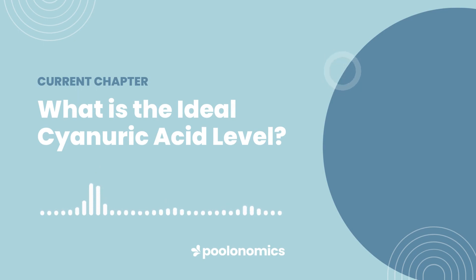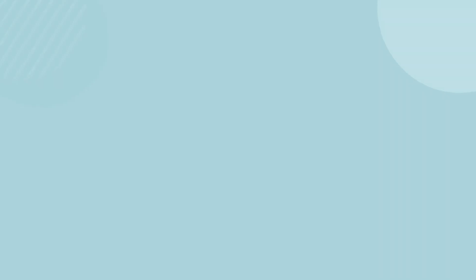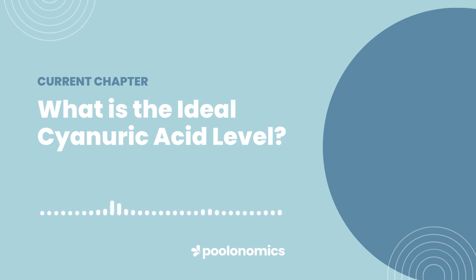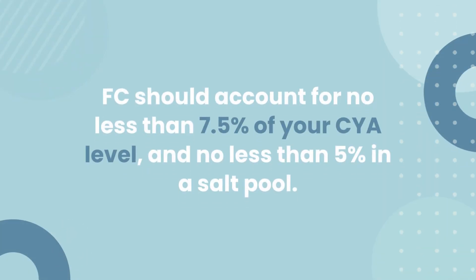However, this assumes that you maintain a free chlorine level of around 1 to 3 parts per million. Your cyanuric acid level scales with your chlorine level, so you'll need to increase cyanuric acid when maintaining higher levels of free chlorine. For saltwater pools, the range is a little higher at 60 to 80 parts per million. This is because a salt pool maintains a much lower sanitiser level due to how chlorine is continuously produced and fed into the water. As a rule of thumb, your free chlorine should account for no less than 7.5% of your cyanuric acid level in a traditional chlorine pool, and no less than 5% in a salt pool.